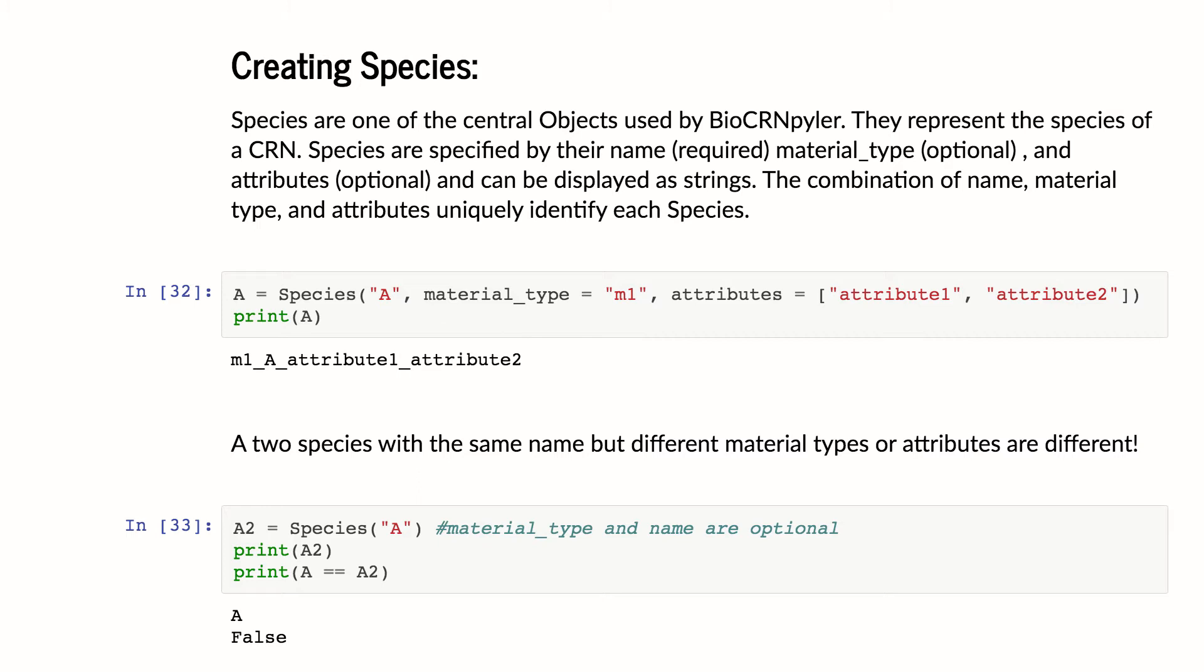Or similarly, maybe you have a protein that can be phosphorylated or not phosphorylated. Well, attributes might be a way to say it's the same protein, but you know, phosphorylated or the non-phosphorylated version.